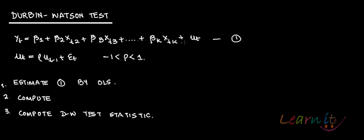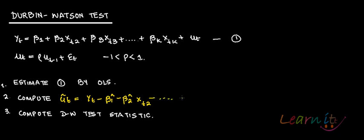You will estimate this first equation by OLS and compute ûₜ = yₜ - ŷₜ, where ŷₜ = β̂₁ + β̂₂x_{t2} + ... + β̂ₖx_{tk}.